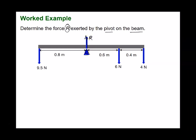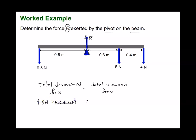For the beam to remain balanced, the total downward force must equal the total upward force. The total downward force is 9.5 + 6 + 4 = 19.5 N, and the total upward force is R. Therefore R = 19.5 newton.